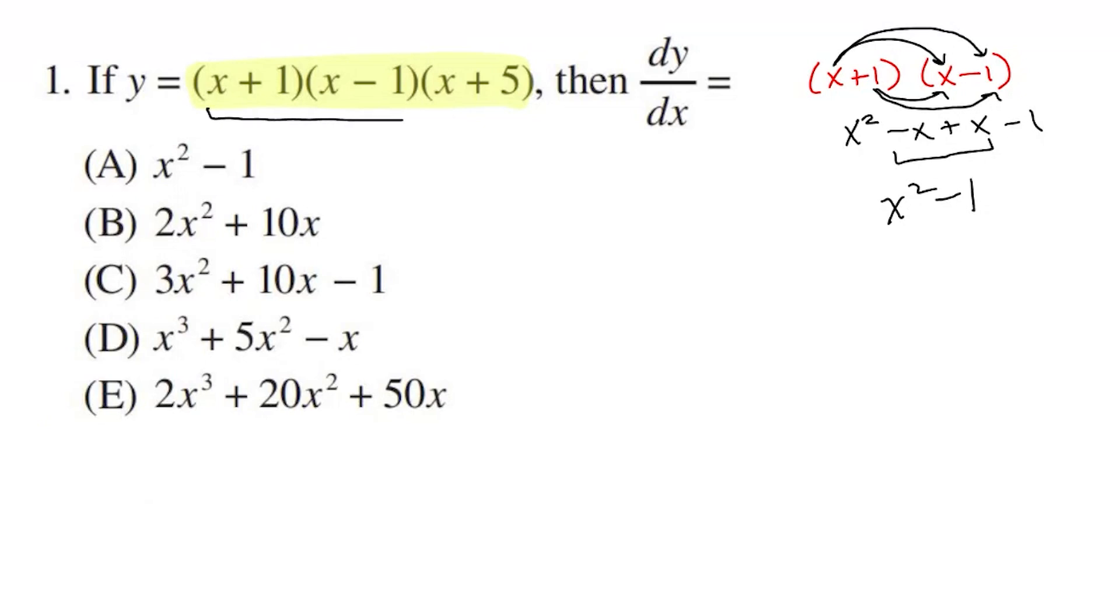So that's what this piece equals. So we can actually rewrite y at this point as x squared minus 1 times x plus 5. And now we can multiply those two factors together. So let's do that. So I'll just do it out to the side here. x squared minus 1 times x plus 5. Again, I'm going to use the distributive property to multiply each term in the first binomial by each term in the second binomial.